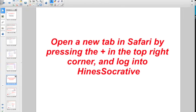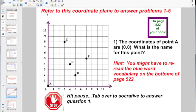So open up a new tab in Safari by pressing the plus sign in the top right-hand corner, and log in to Heinz-Sokrata. We want to refer to this coordinate plane to answer problems 1 through 5 in Socrata. This can also be found on page 522 of your book. Question number 1 is going to say, The coordinates of point A are 0, 0. What is the name for this point? You might have to re-read the blue vocabulary words on the bottom of page 522. Now hit pause, tab over to Socrata to answer question 1.